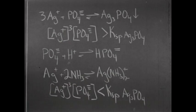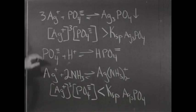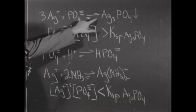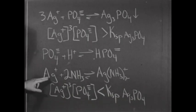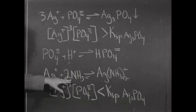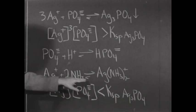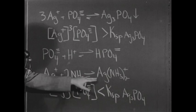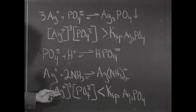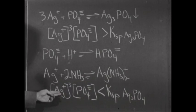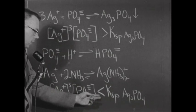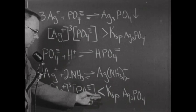When ammonia was added to suspensions of silver phosphate, it reacted on the silver ion in equilibrium with the precipitate. The silver ion reacts with two molecules of ammonia to produce the silver-ammonia complex ion, lowering the concentration of the silver ion, making that term very small, and once again the product falls below the solubility product constant, so the precipitate dissolves.